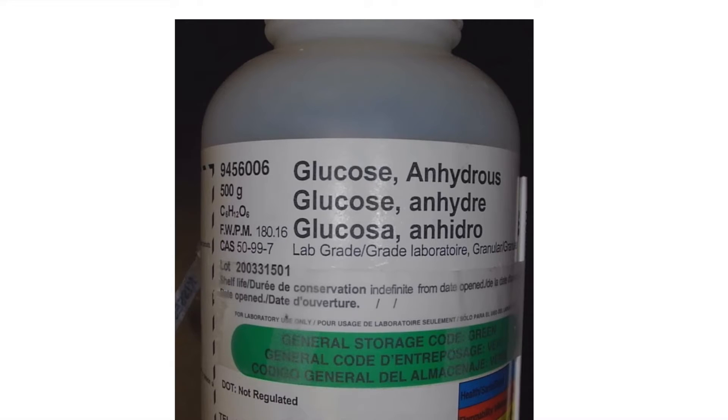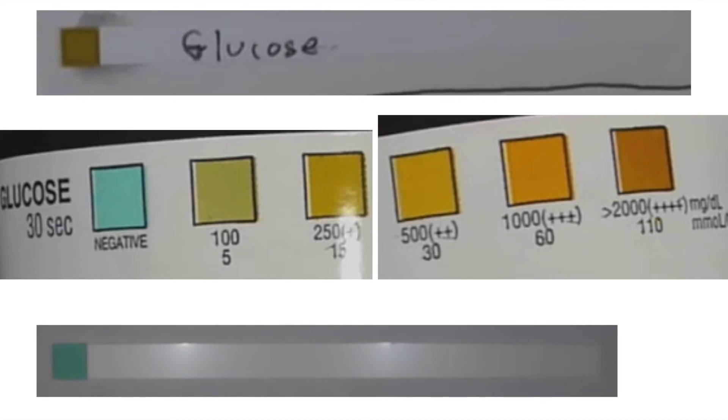So here is a bottle of glucose. Another common name for glucose is going to be corn sugar or sometimes corn syrup. It's not sucrose. Sucrose is a disaccharide. Glucose is a very simple monosaccharide. So if we mix a little glucose with water, dip a glucose test strip in, this is what we get.